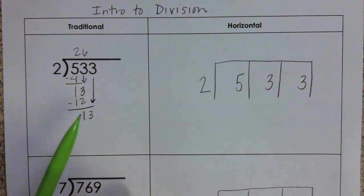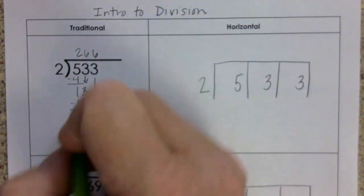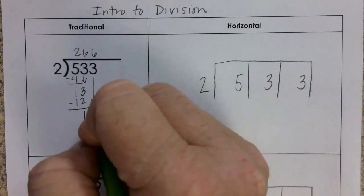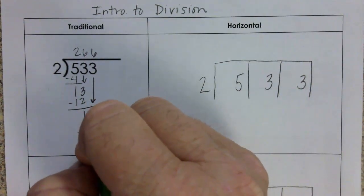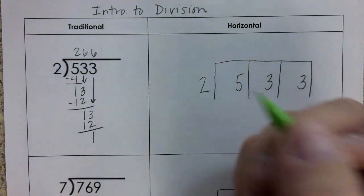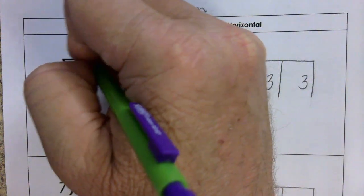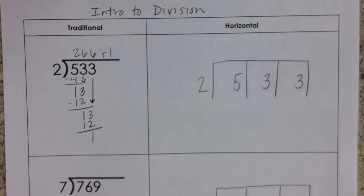2 goes into 13 6 times. 6 times 2 is 12. 13 minus 12 is 1. So our answer here is 266 with a remainder of 1.